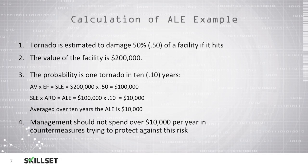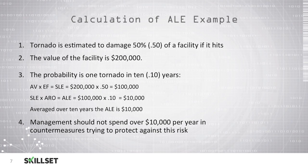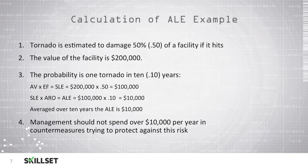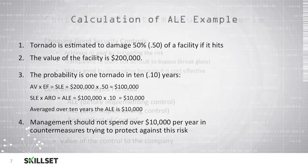So in order to make a cost-effective budgeting decision when purchasing a countermeasure to avoid the risk of a tornado, management should not spend more than $10,000 per year in countermeasures attempting to protect from a tornado, because that would not be cost effective. For the CISSP examination, you should be familiar with the exposure factor, single loss expectancy, annualized loss expectancy, and the annualized rate of occurrence, and be able to calculate these values based on a scenario given to you during the examination.